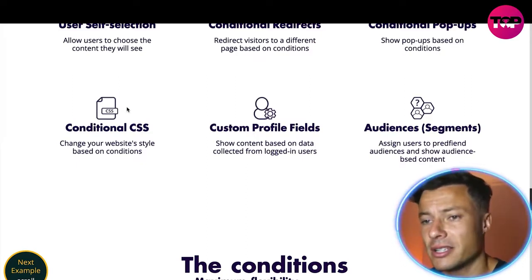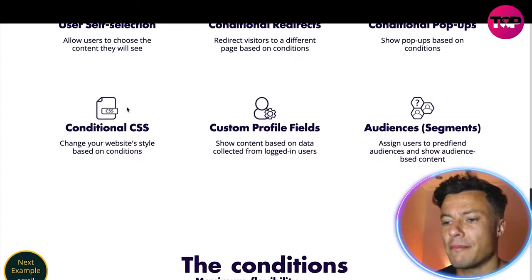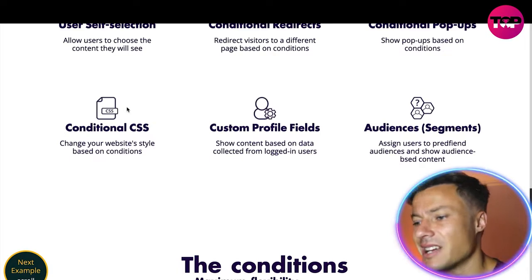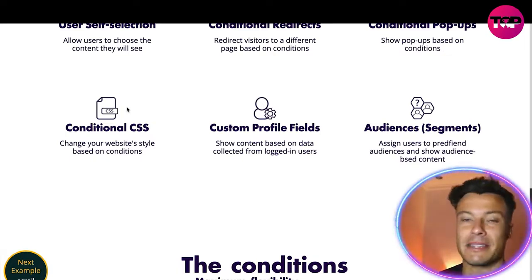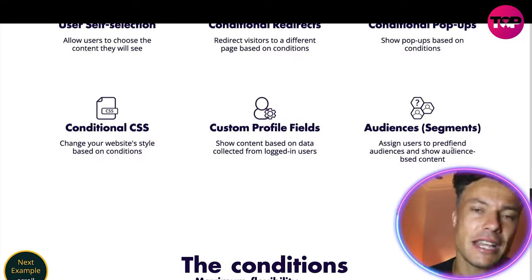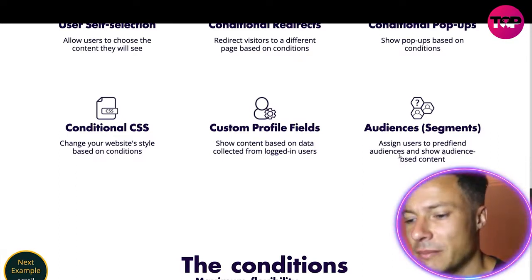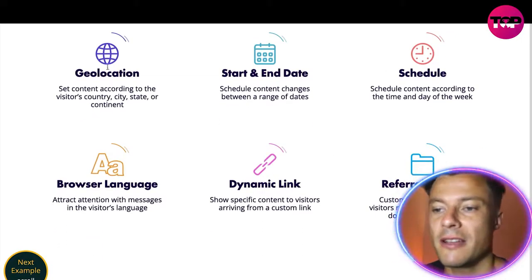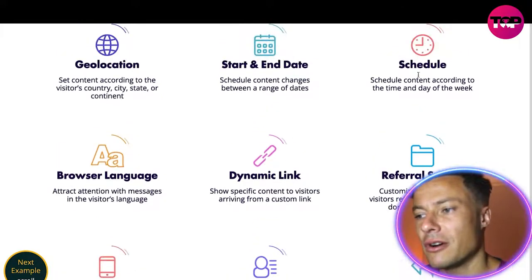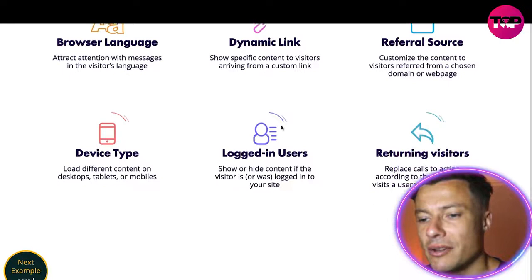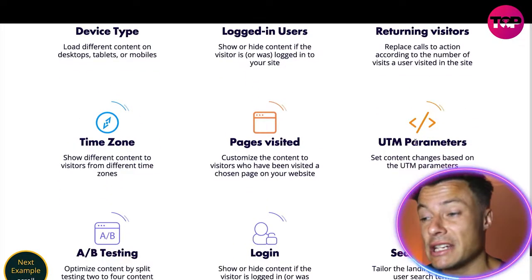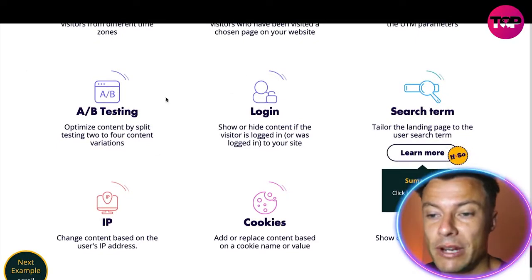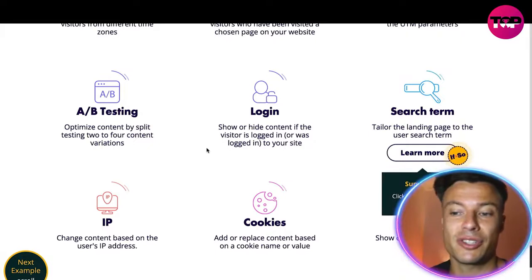That's a really good way to build rapport with your customers. There are also custom profile fields that show content based on data collected from logged-in users, and audience segments that let you assign users to pre-defined audiences and show audience-based content — similar to how an email flow system might work but for viewing the website. The conditions available include geolocation, schedules, browser language, device types, and many more.